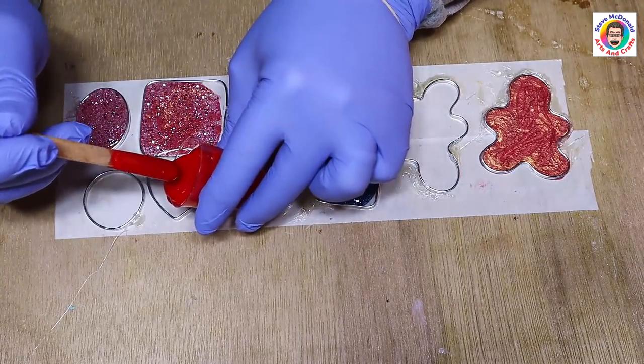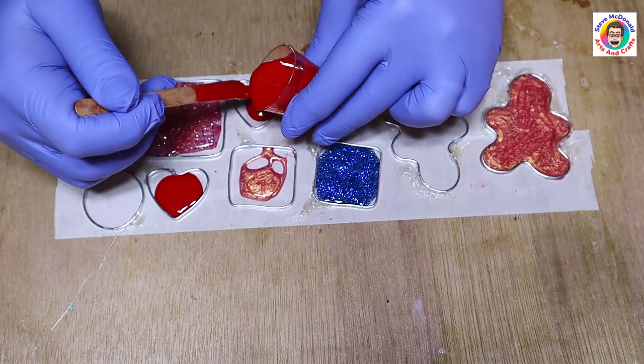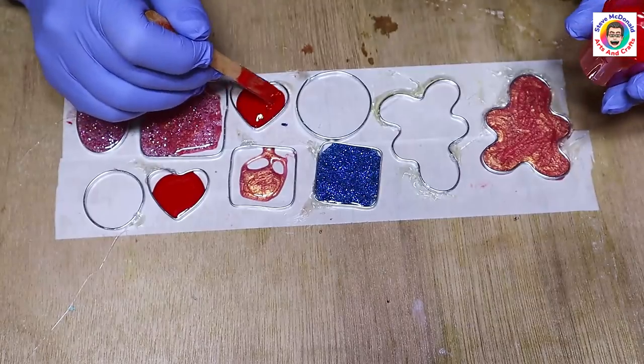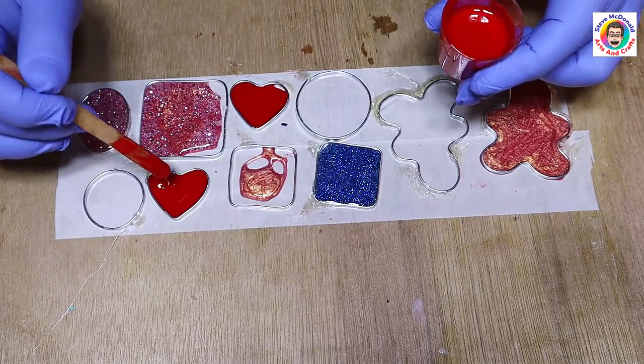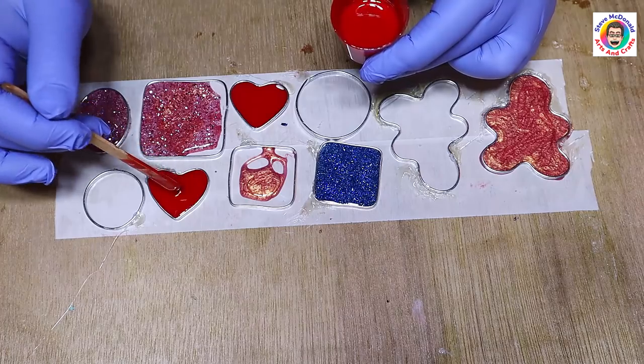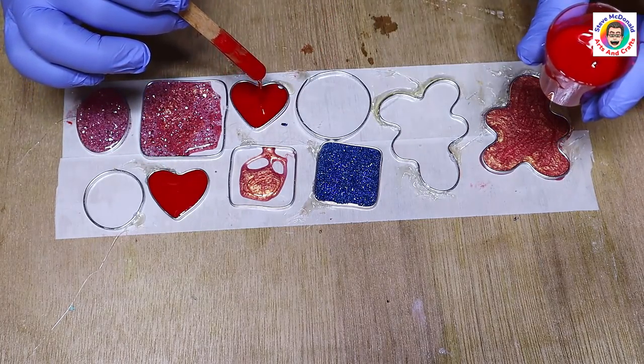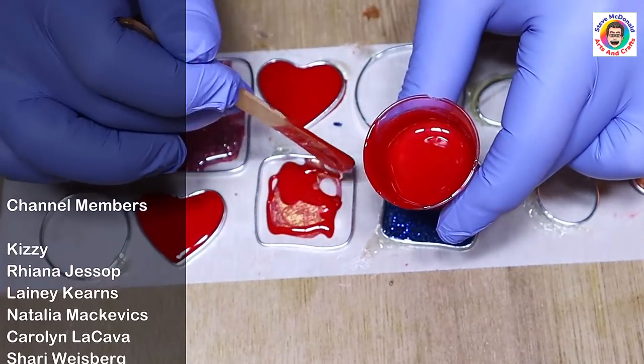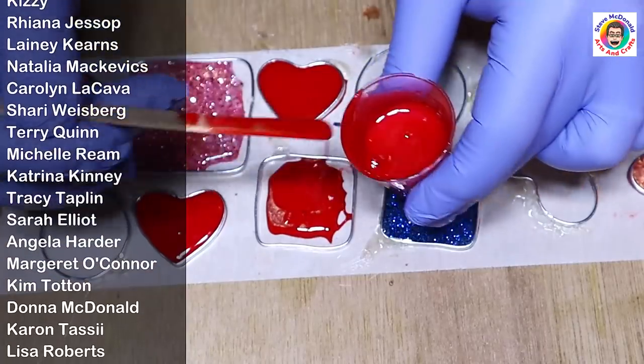I like using glitter and pigment and mica powder because you do get some really good effects. Like here with the hearts, what's better than a nice red heart that you've made yourself. I never overfill them because there is no need to.